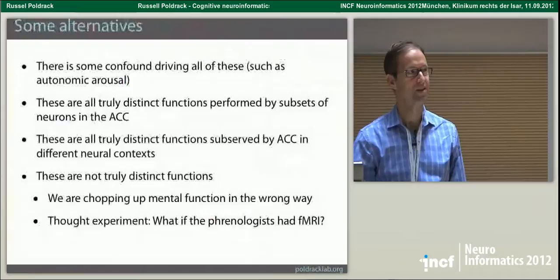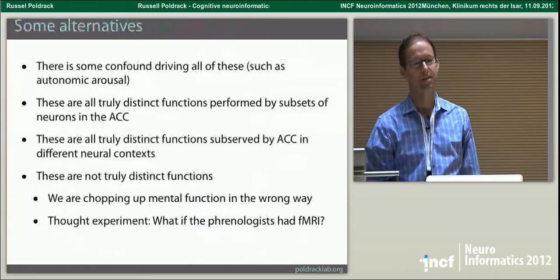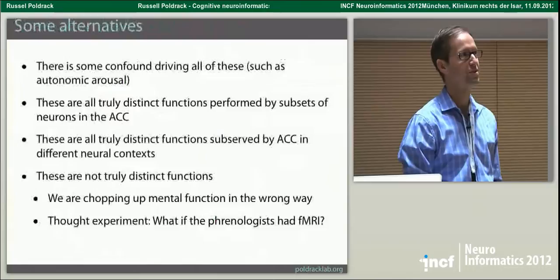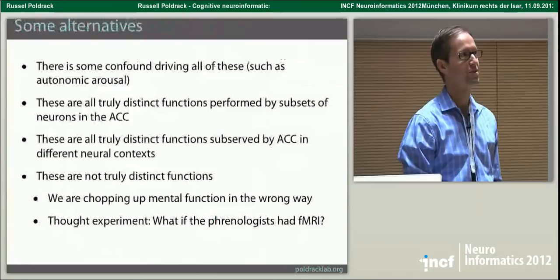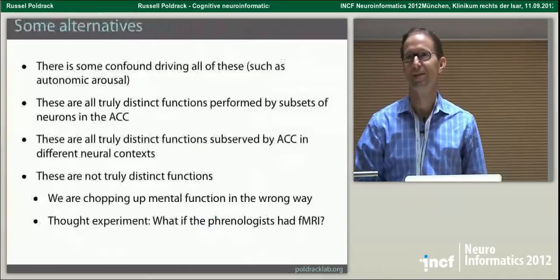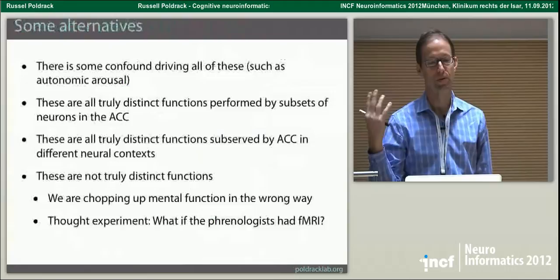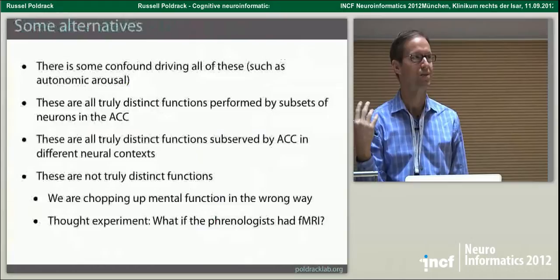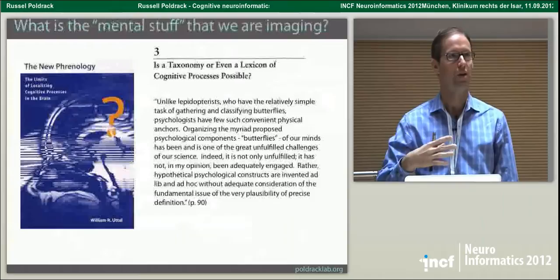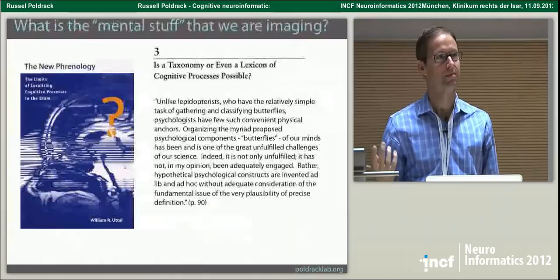We see, for example, that a region like the anterior cingulate shows up when we have people engage in maintenance. But if you look across lots of different studies, you see that lots of different psychological manipulations end up turning on very similar looking patterns of activity. These are patterns estimated via meta-analysis — associated with the presence of particular words in papers — but if you look at actual studies you see a very similar story: the same areas light up across many different types of task manipulations.